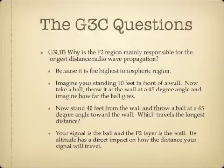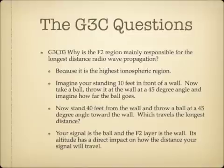Why is the F2 region mainly responsible for the longest-distance radio wave propagation? Because it is the highest ionospheric region. Imagine standing 10 feet from a wall and throwing a ball at a 45-degree angle — note where it bounces. Now stand 40 feet away and throw at the same angle; that ball travels much farther. If your signal is the ball and the F2 layer is the wall, the height of the F2 region directly determines how far your signal will travel.